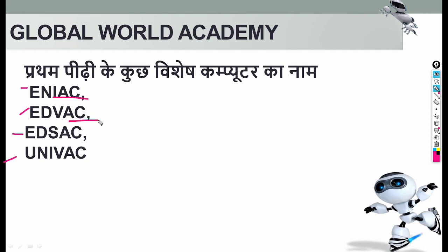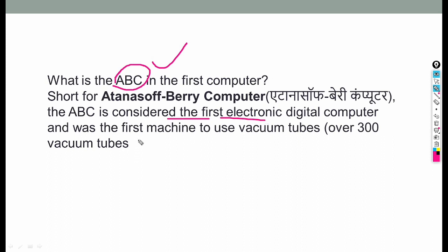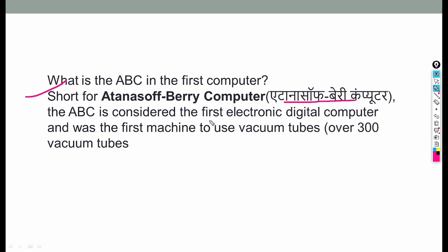You may be asked in the exam: what is ABC's full form? ABC stands for Atanasoff-Berry Computer. ABC was the first electronic digital computer and the first machine to use vacuum tubes — it used 300 vacuum tubes. It was designed in 1942. This is an important exam question.